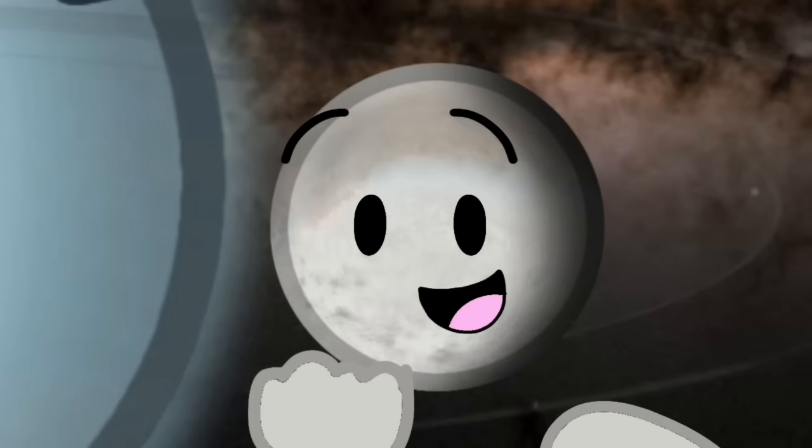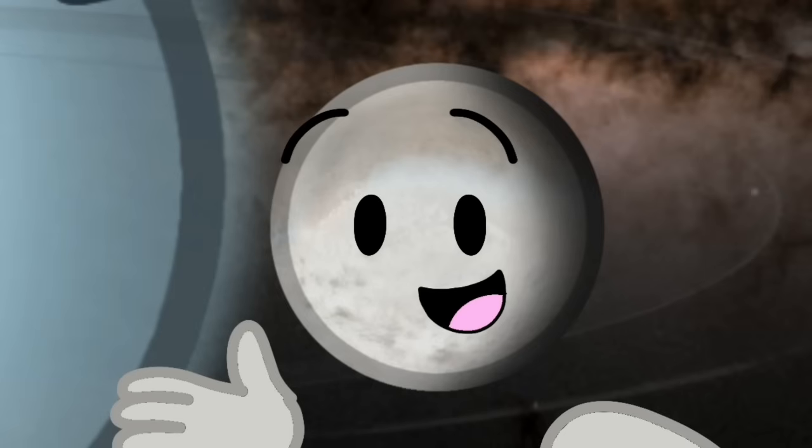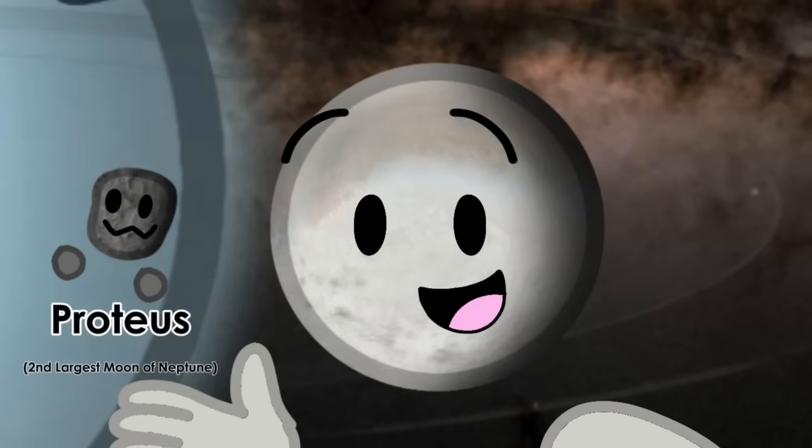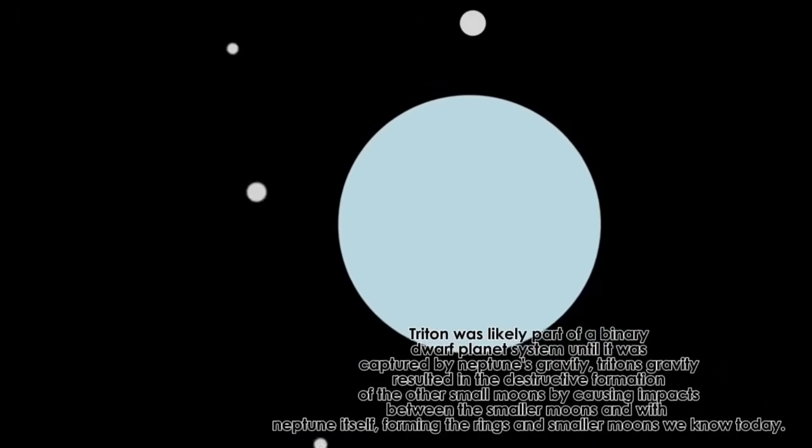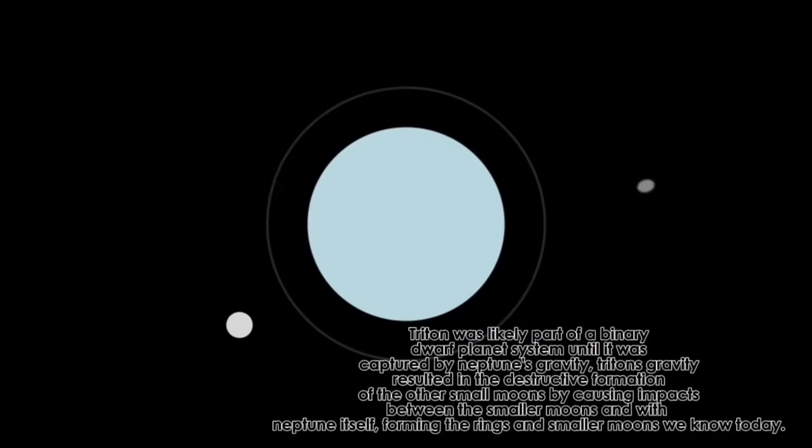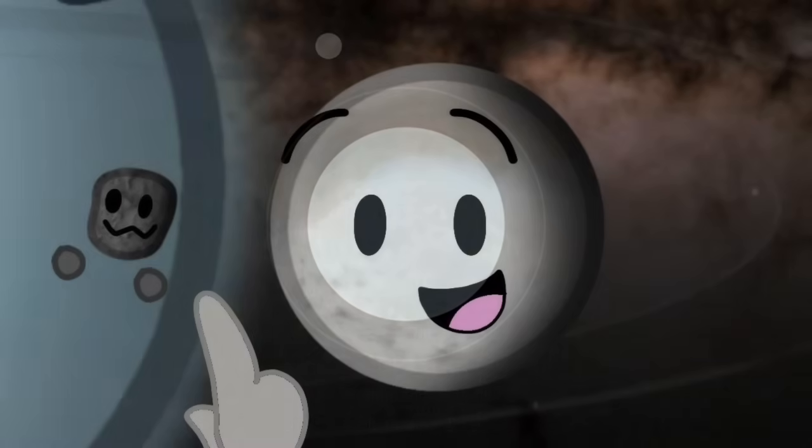My name's Triton. Neptune only has one spherical moon. I too have a subsurface ocean, a thin atmosphere, and cryovolcanoes. The rest of Neptune's moons are nothing more than fragments of the past and captured asteroids. It's likely that instead of forming with Neptune, I once was a dwarf planet that was captured by her gravity in the past, and that's also why I'm the only major moon with a retrograde orbit.